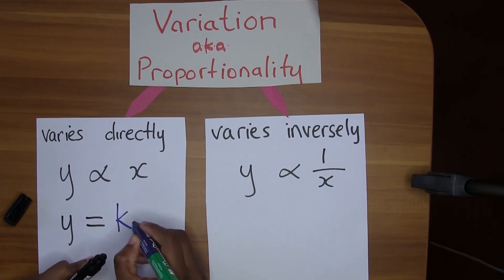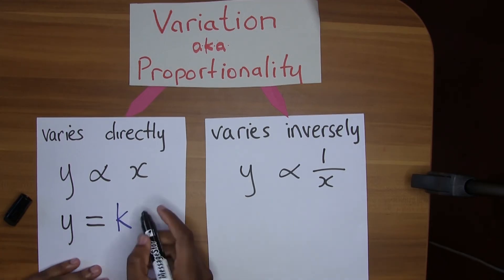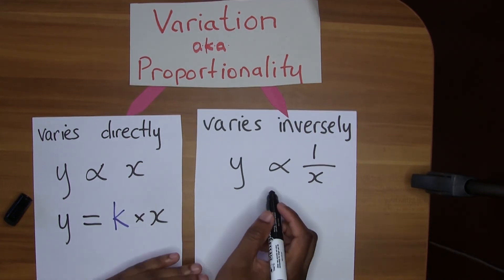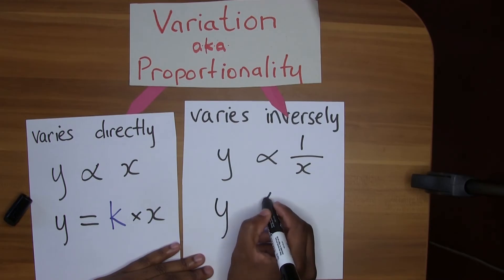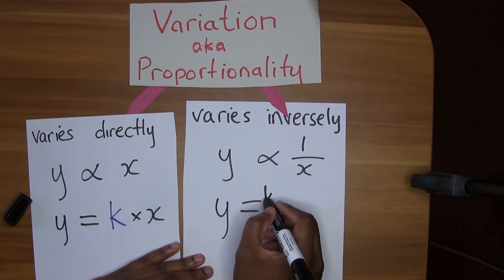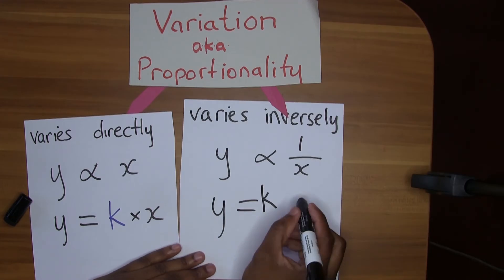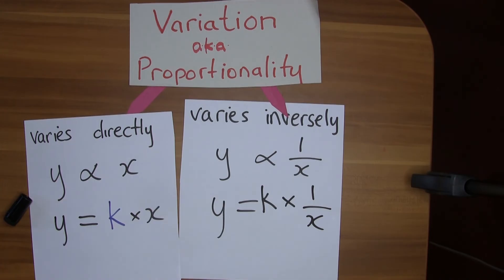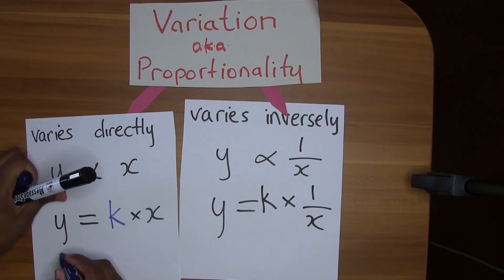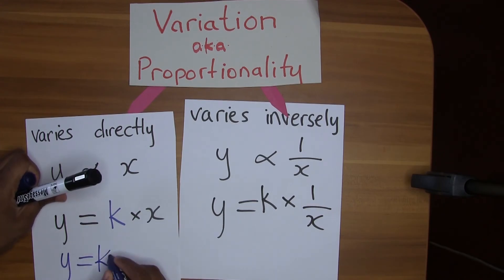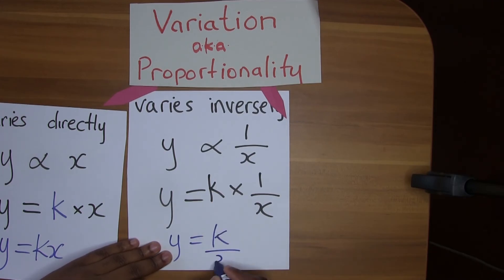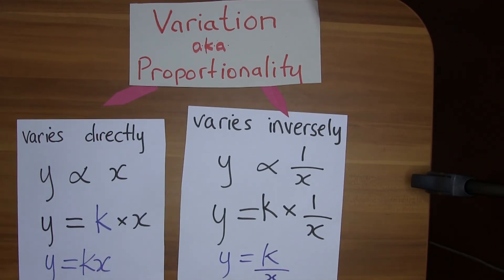Y is equal to k times x — k here is the constant of variation. Similarly, y is equal to k times 1 over x. Removing the multiplication sign to make it look neater: y equals kx, and y equals k over x. It means the same thing.